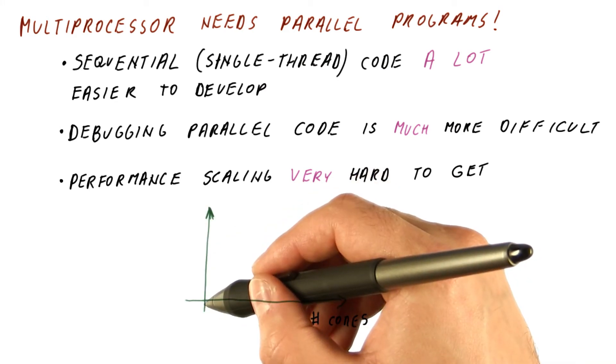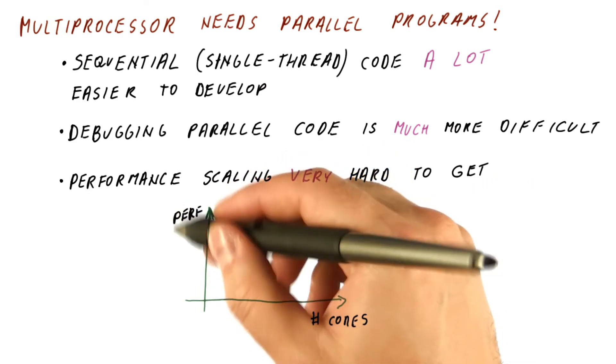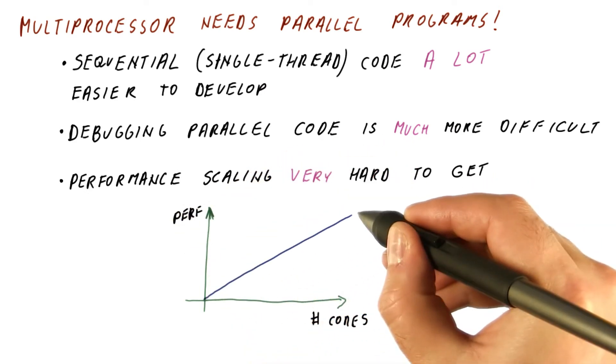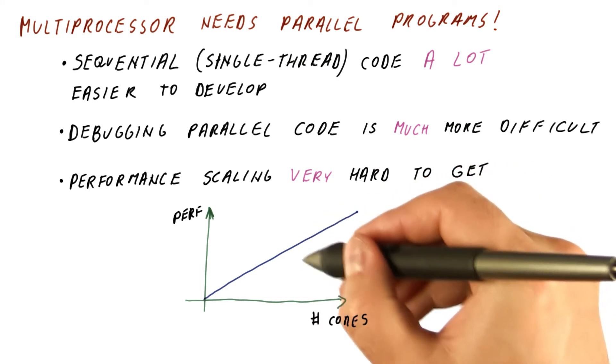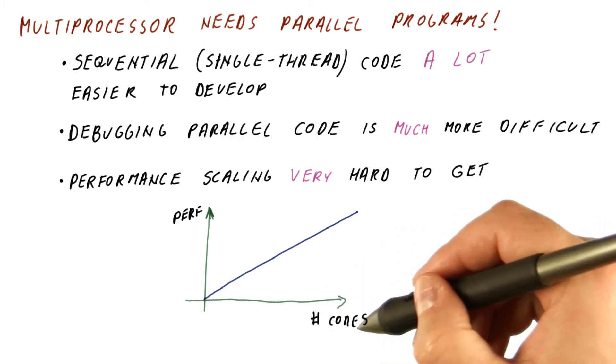Performance scaling is a property of the program that, as we increase the number of cores, its overall performance keeps improving. This would be ideal performance scaling. You get more performance in proportion to the number of cores you are given.